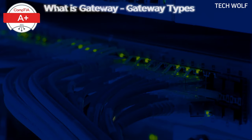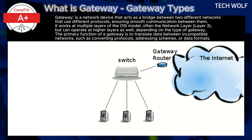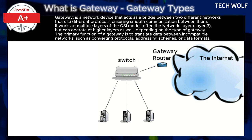What is a gateway and what gateway types are there in networking? A gateway is a network device that acts as a bridge between two different networks that use different protocols, ensuring smooth communication between them.